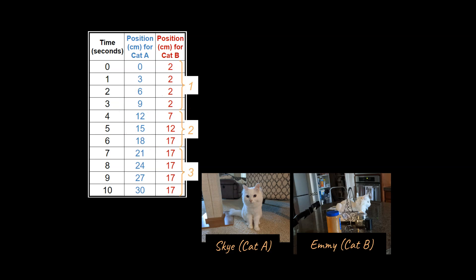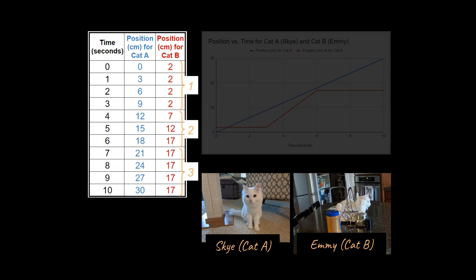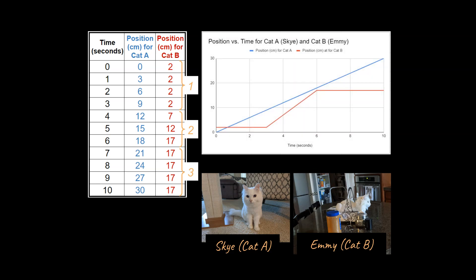I'm going to go ahead and label these as 1, 2, and 3. So during section 2, which would have a greater slope, Cat A or Cat B? And hopefully you're able to come up with the idea that during section 2, this Cat B data would have a greater slope.